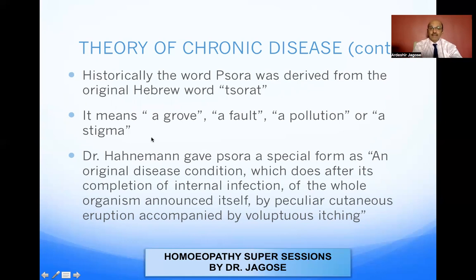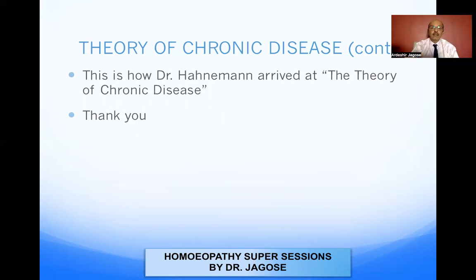Dr. Hahnemann gave psora a special form, and I quote: 'an original disease condition which, after its completion of the internal infection of the whole organism, announces itself by a particular cutaneous eruption accompanied by voluptuous itching.' So whenever the original disease cause lies internally — the psora miasm — and when it is activated, it manifests in the form of peculiar skin eruptions with voluptuous itching. Therefore, you have to not only see the tip of the iceberg, but go deeper into the root cause of the disease. This is how Dr. Hahnemann arrived at the Theory of Chronic Disease. I hope you liked this video. If you found it beneficial, please give it a thumbs up, share, comment, and like. Thank you very much.